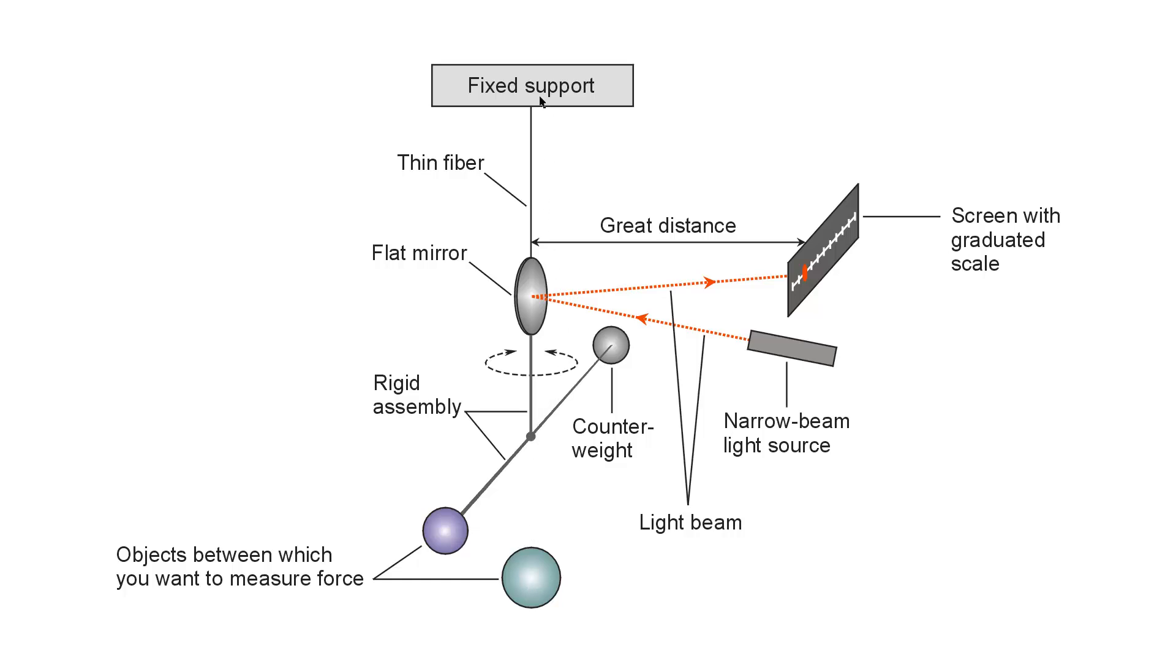The apparatus consists of a flat mirror, polished and shiny as can be, suspended by a thin fiber, like a hair, just a hair-thin fiber, so that it can easily turn. The slightest little force will cause this mirror to rotate.